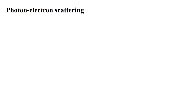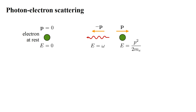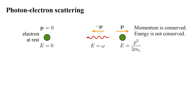Now let's consider the interaction of a photon and a free electron, that is not bound within an atom — the problem of photon-electron scattering. Imagine we have an electron at rest, with zero momentum and kinetic energy. Suppose it spontaneously emits a photon of frequency omega. This photon has linear momentum, let's call it minus p. To conserve zero total momentum, the electron must gain momentum p. The photon has energy omega in natural units, and the electron has kinetic energy p-squared over two-me. Momentum is conserved, but energy is not.